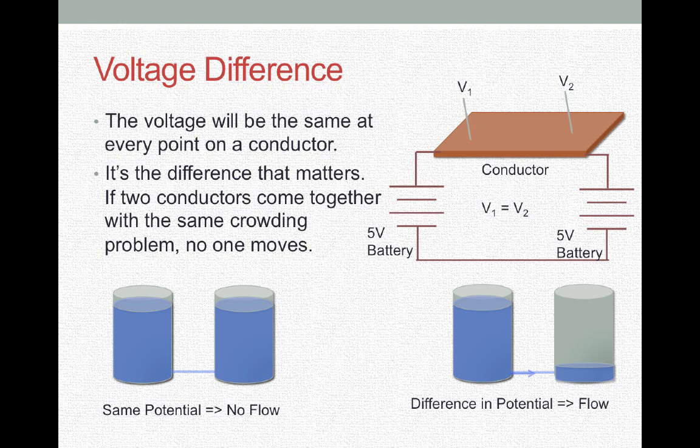Let's talk about what we mean by voltage difference. So the voltage difference is what is the potential that would cause electrons to move. We can think about that in terms of if the voltage is the same on a conductor, no electrons are moving. If you look at the figure on the right with the conductor and the two batteries, those two batteries are equal voltage and that means that the voltage at any point on that conductor is going to be the same. This is analogous to two tanks that are at the same level. They have the same potential and there's no flow between the two tanks.